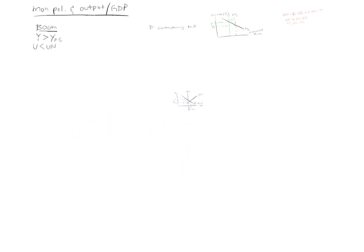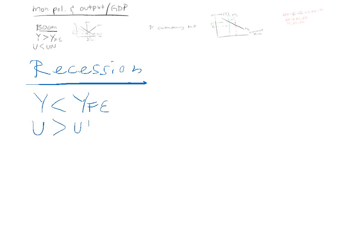And the opposite applies in the situation of a recession. You are in a recession. Output is less than potential output. Unemployment is higher than the natural rate. Okay. What happens? We just go again step by step.